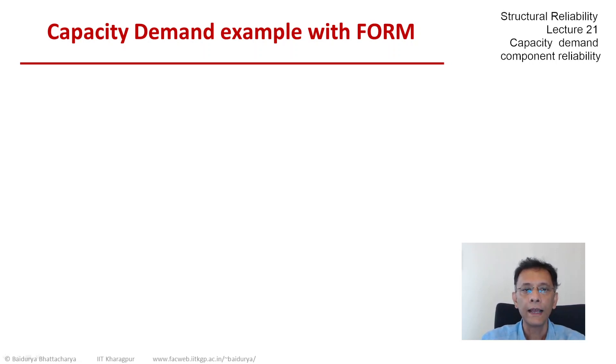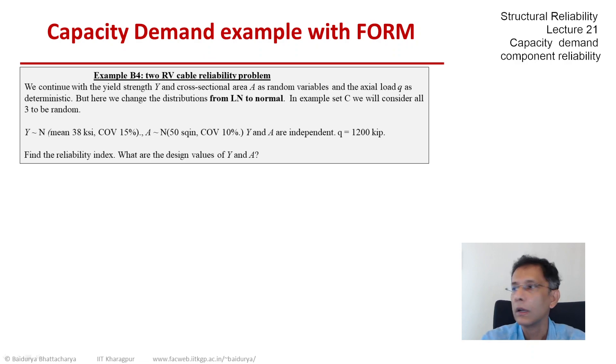Let's take a look and see what we would do if we encountered a nonlinear limit state. B4 gives us an opportunity. It's the same problem in terms of element definition - a cable under tension. The yield strength is random. The cross sectional area is random.